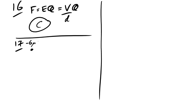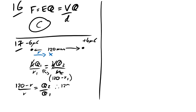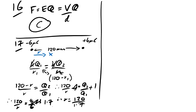Question 17: classic question with charges −6 μC and +4 μC separated by 120 mm. Find the point where electric potential is zero. Setting kQ₁/R₁ = kQ₂/R₂ (taking magnitudes), with R₂ = 120 − R₁: 120/R − 1 = Q₂/Q₁ = 4/6. So 120/R = 4/6 + 1 = 10/6 ≈ 1.67. Therefore R = 120/1.67 ≈ 72 mm. Answer is D.